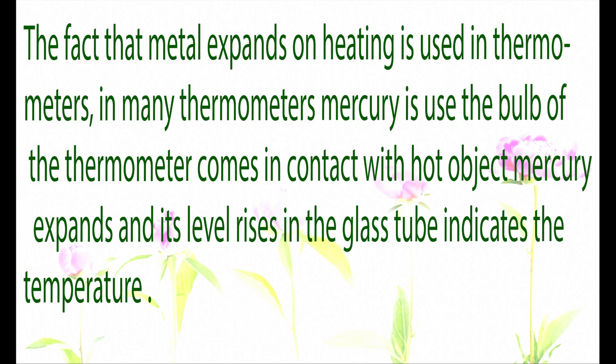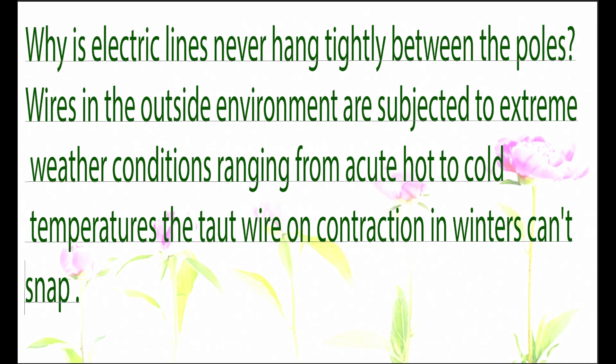The fact that metal expands on heating is used in thermometers: mercury in the bulb comes in contact with the hot object, expands, and its level rises in the glass tube to indicate the temperature. Electric lines are never hung tightly between poles because wires in the outside environment are subjected to extreme weather conditions. Tight wires would snap on contraction in winters, so wires are kept a bit loose.